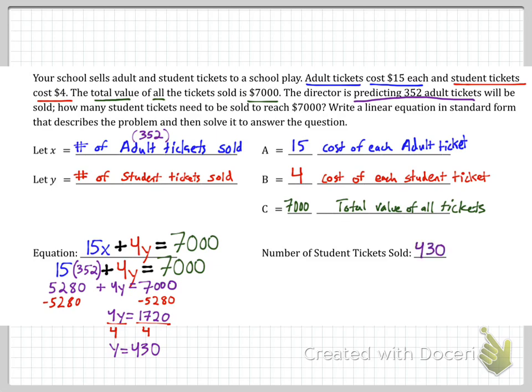Before we move on, I'm going to show you guys how to check your work here. You can always check by writing out your equation. So fifteen times 352, that's going to be the value from all the adult tickets. And 4 times 430, that's the value from all the student tickets. That should add up to seven thousand. Does it? Well, when you type it into your calculator, it does. Check.